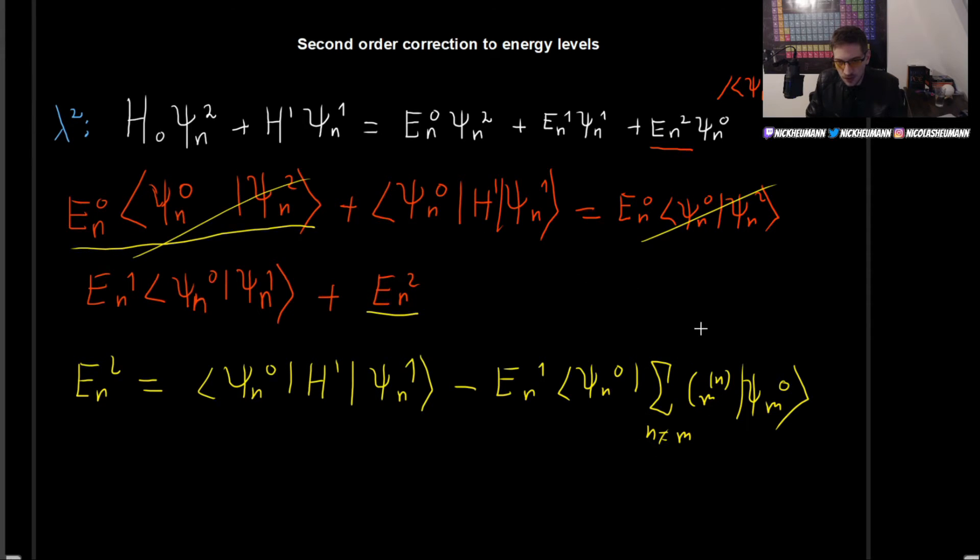So what we would get is the sum, n different from m, C_mn, and Psi_m^0. And let me just delete this part right here, since we already used it. And we can pull now the sum outside. And what we have is Psi_n^0, Psi_m^0. And since n and m have to be different, and these are orthonormal states, this means that this part is going to be 0. So this entire term right here is now 0.